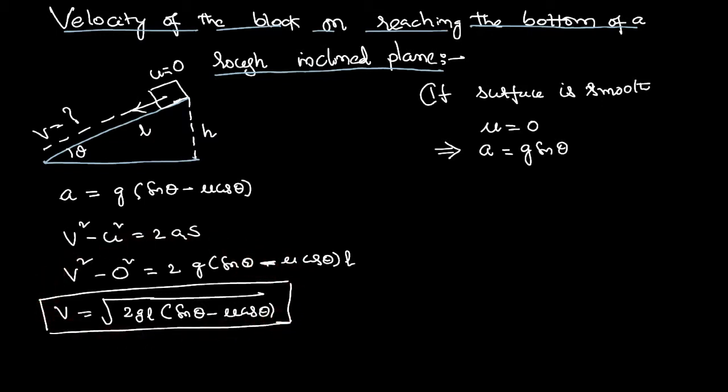Correspondingly, the final velocity acquired by the body by the time it reaches the bottom will also change. We can calculate the final velocity as root 2gL sin theta. The mu component and the cos component will automatically become 0.